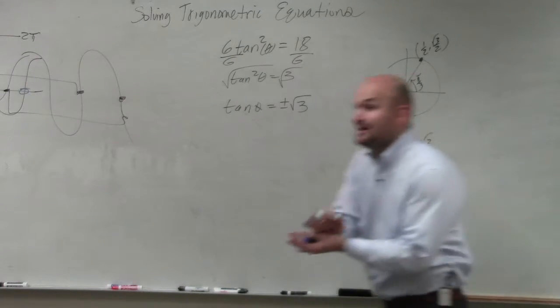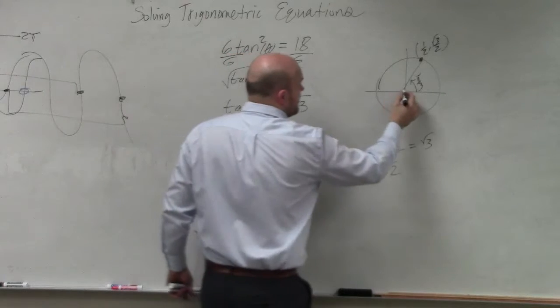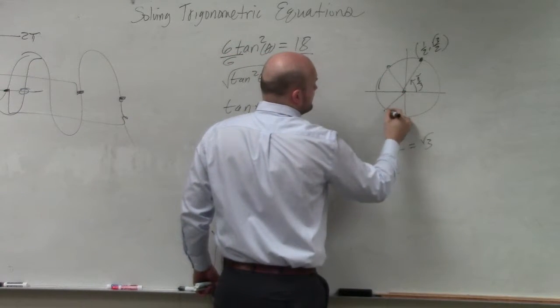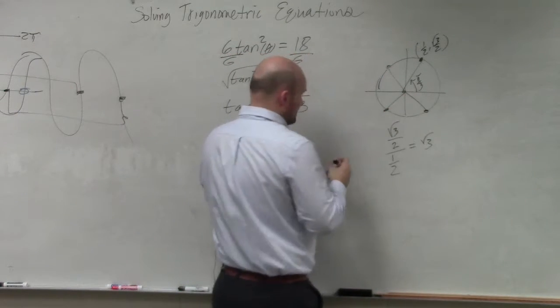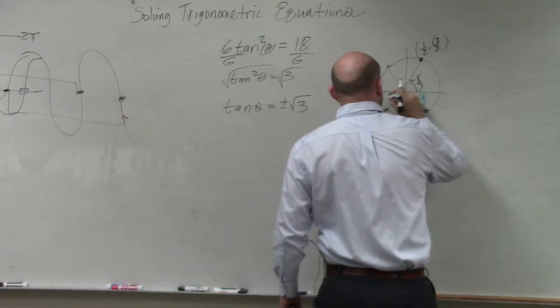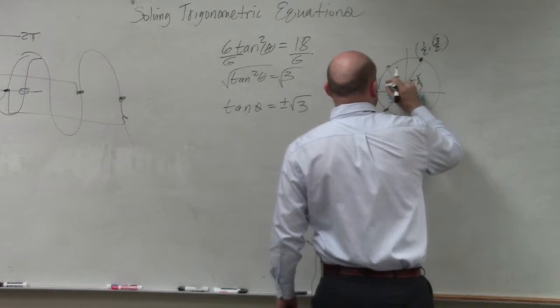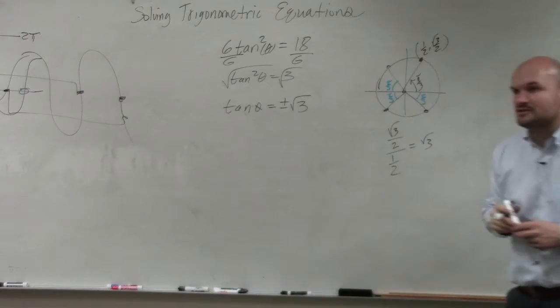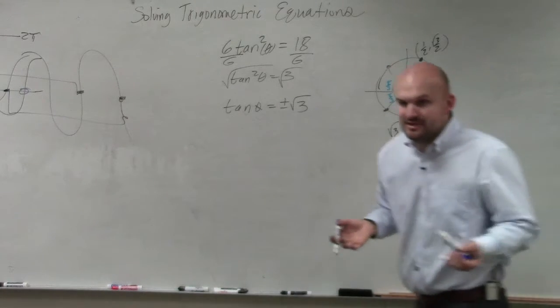Now, they want to do positive and negative. So that means all the angles where the reference angle is pi over 3. So each one of these angles, my reference angle is pi over 3. I just need to figure out what they are.